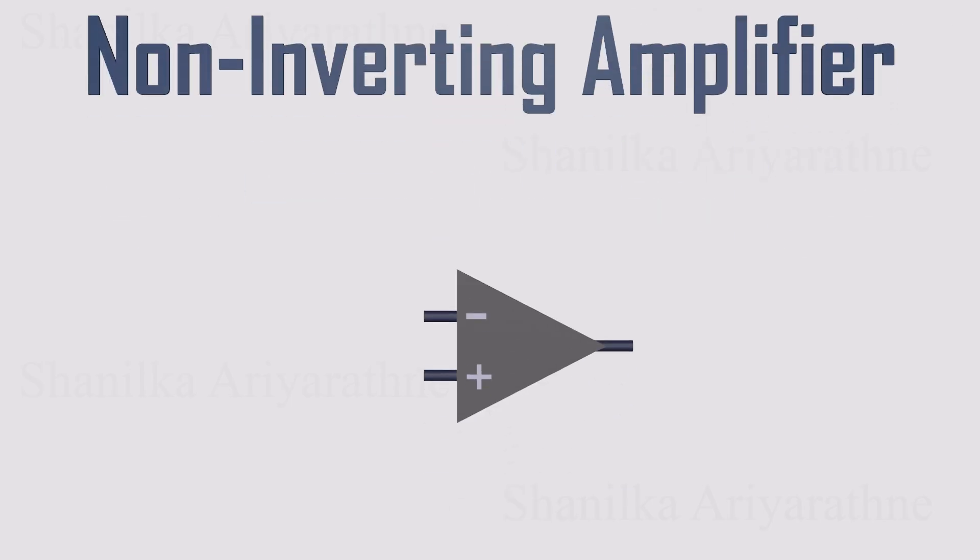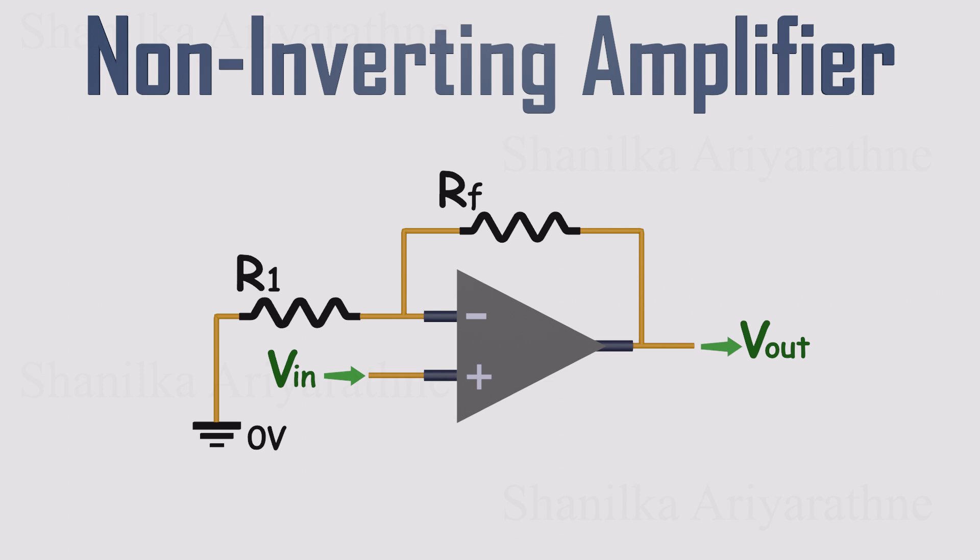Here's how we build it. Just like before, the output is fed back into the inverting input through resistor Rf, and another resistor R1 is connected from the inverting input down to ground. The input signal, however, goes directly into the non-inverting input. In this setup, the inverting input isn't grounded directly. It acts as a reference point controlled by the feedback network. With that in place, the op-amp balances itself so the output responds to the input properly.